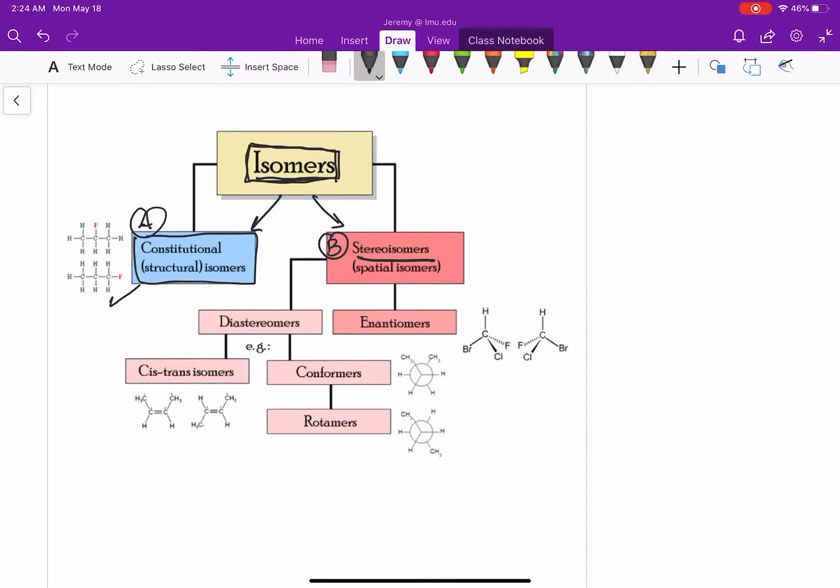Constitutional isomers are structures that have the same formula, but they have a different connectivity. They are compounds that have the same formula, but a different connectivity.